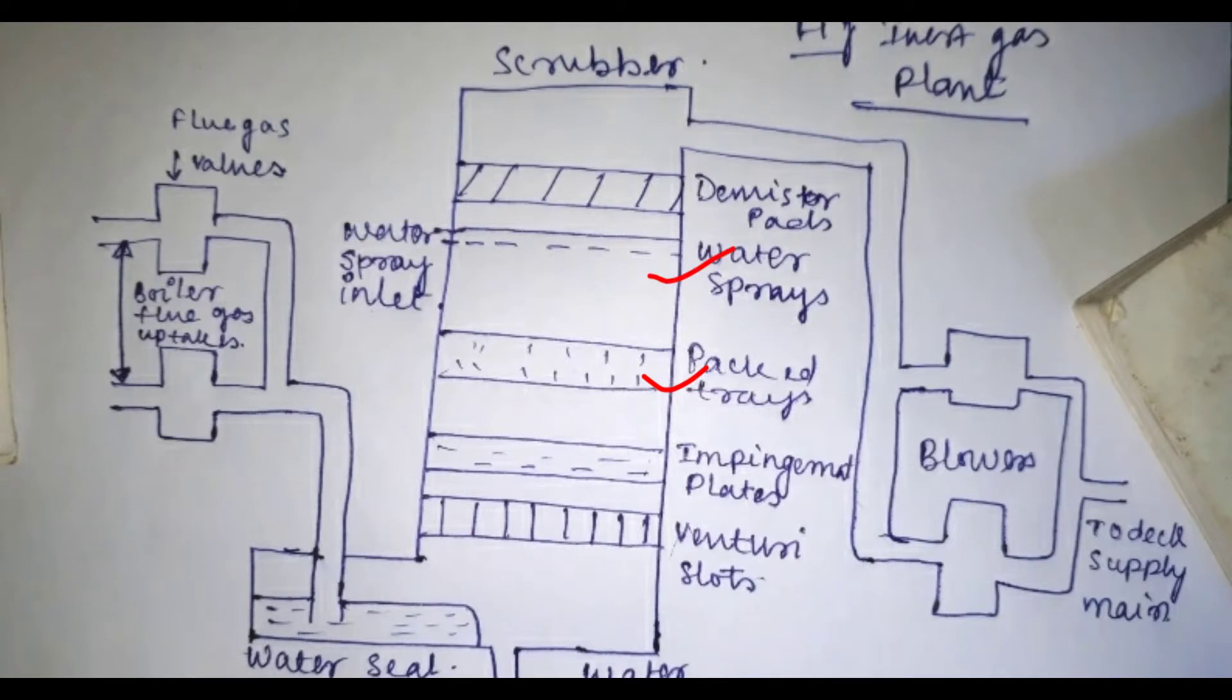The water sprays. The flue gas enters the bottom of the tower of the scrubber and moves upwards through the down-flowing sea water and layered arrangement, ensuring maximum contact between water and gas.